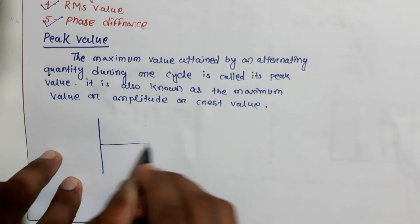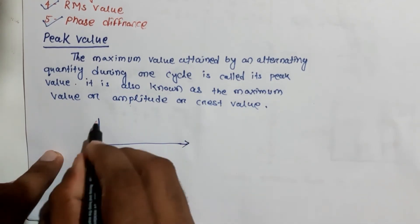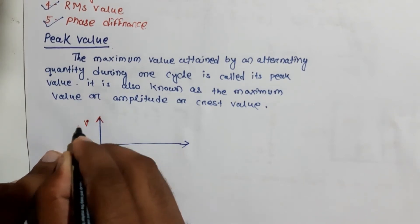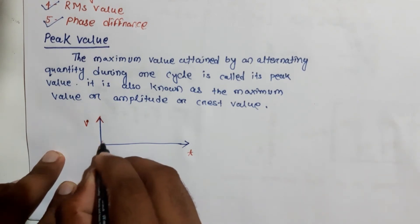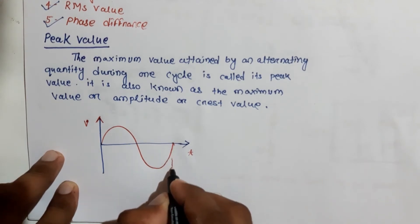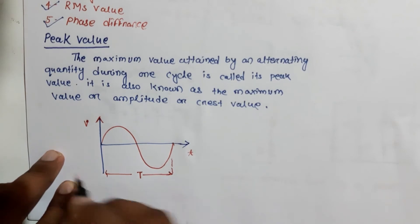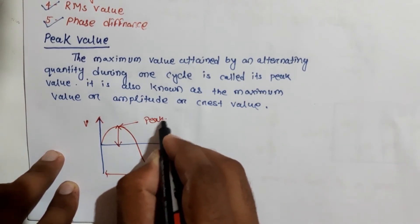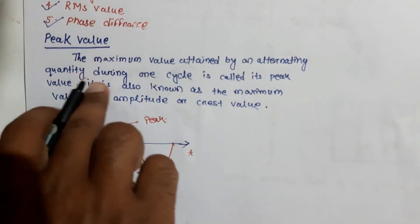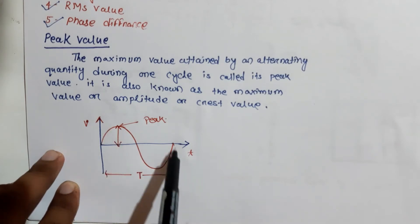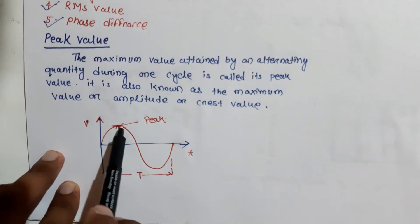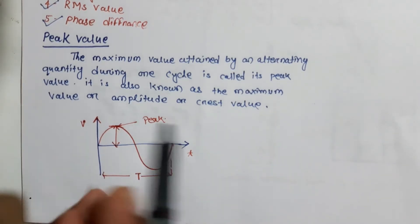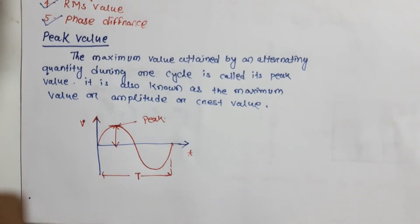Let's take an example of alternating current. Consider a voltage versus time axis showing one complete cycle — that is one time period. The maximum value reached in this cycle is the peak value. In the positive half cycle it reaches towards the highest point, which is the peak value, also known as the maximum value, amplitude, or crest value.